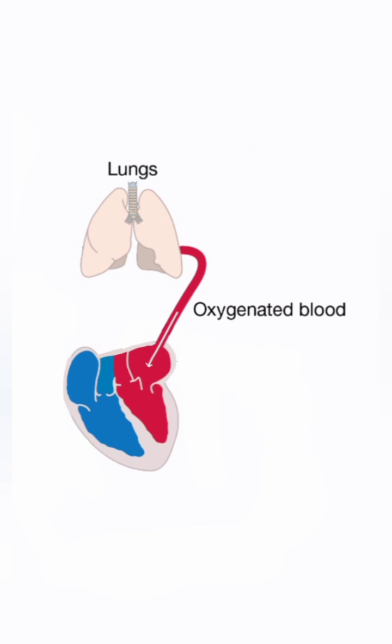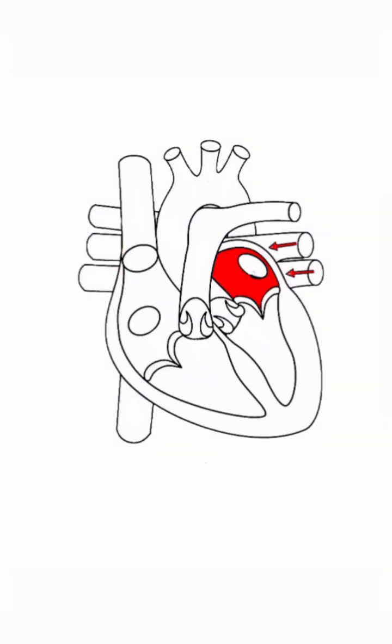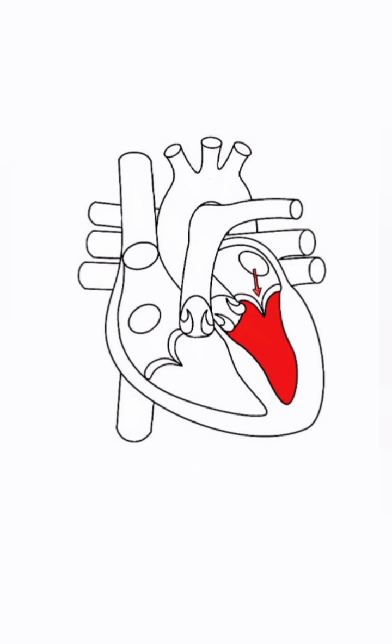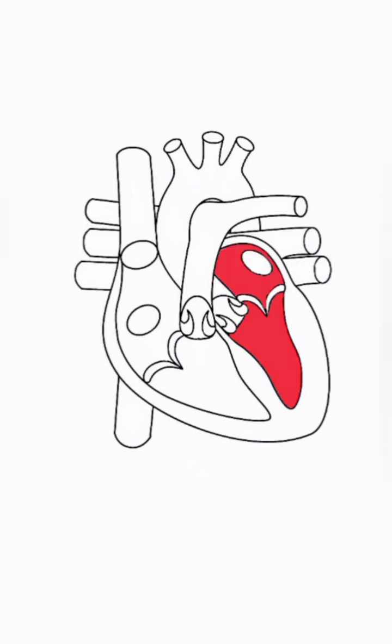Oxygenated blood returns via the pulmonary veins into the left atrium, then it flows through the mitral valve into the left ventricle. These chambers now hold oxygen-rich blood.